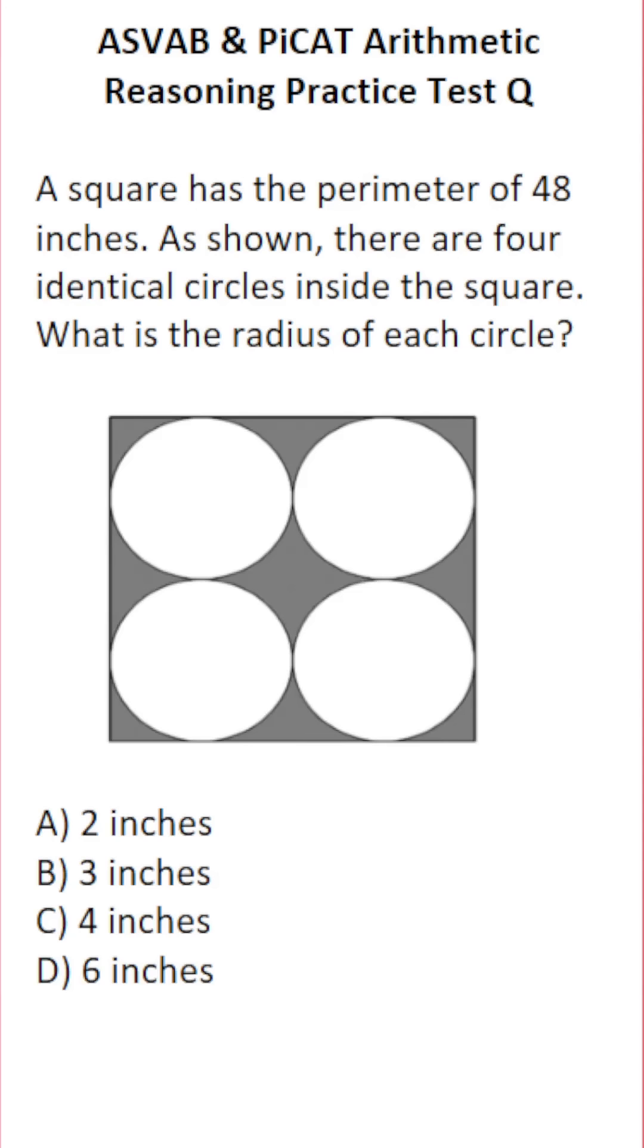This arithmetic reasoning practice test question for the ASVAB and PICAT says, a square has the perimeter of 48 inches. As shown, there are four identical circles inside the square. What is the radius of each circle?